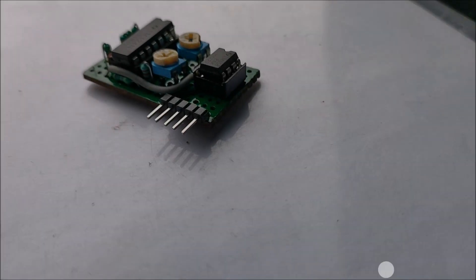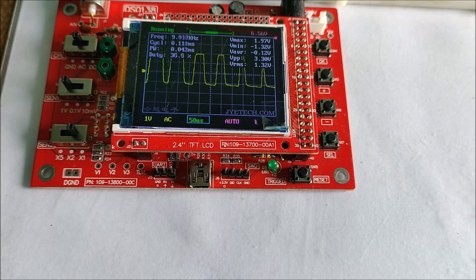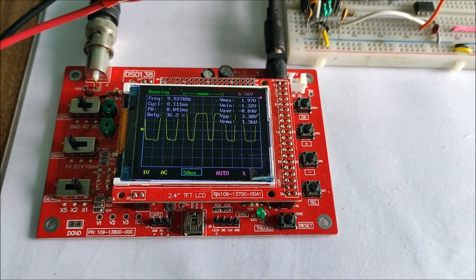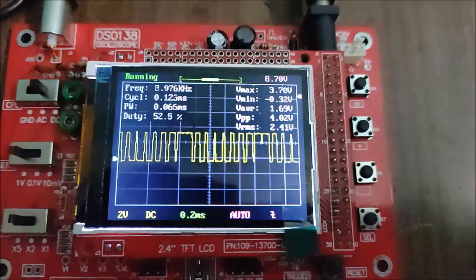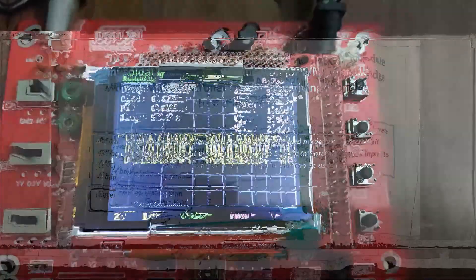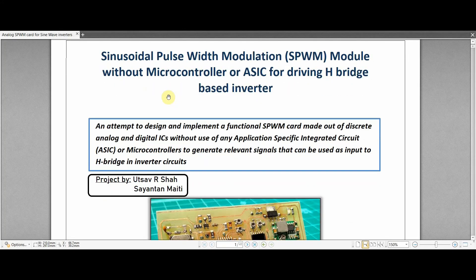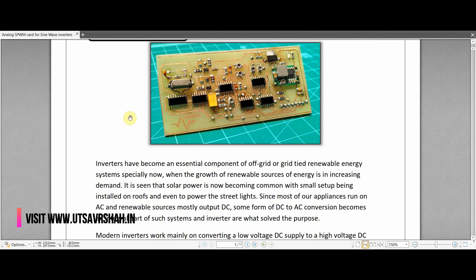I had previously made a project demonstrating the concept of SPWM by comparing two triangular waves and generating the required output. That was a pretty simple concept and this analog SPWM card is kind of the follow-up of this project. I have documented the detailed overview of this project in the PDF which is available to view and download from my website, the link to which will be in the video description.